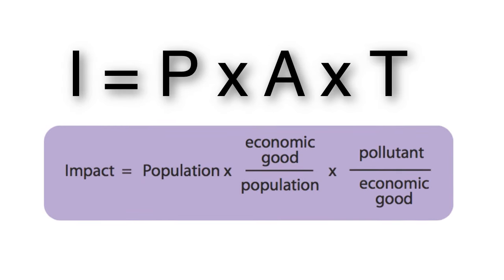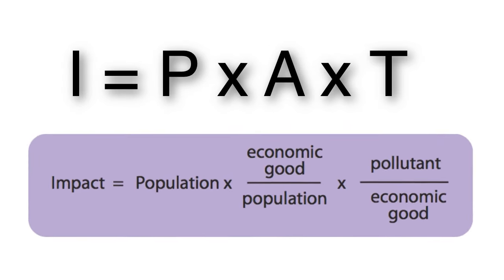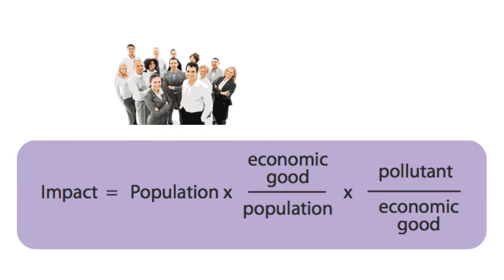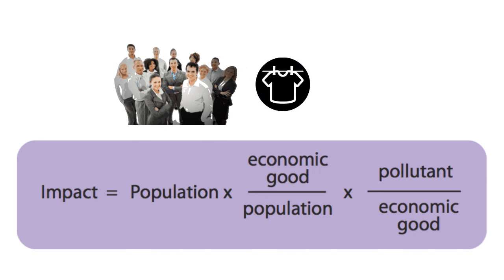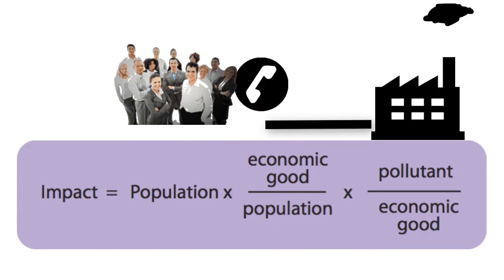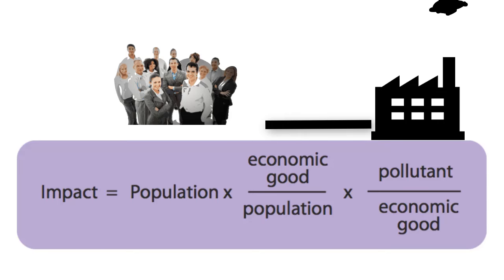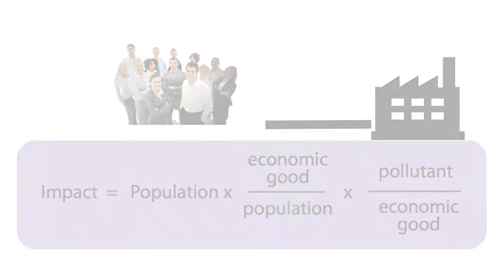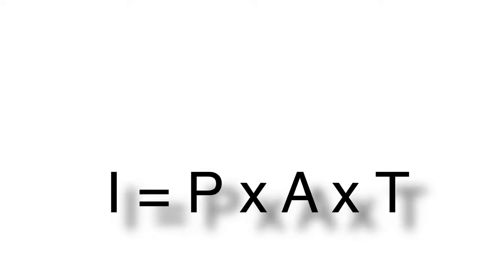The model presumes that each person represents a consumer of economic goods and services. The affluence term represents the economic goods and services that are able to be consumed per person. The technology term represents the pollutants emitted per economic good or service consumed.